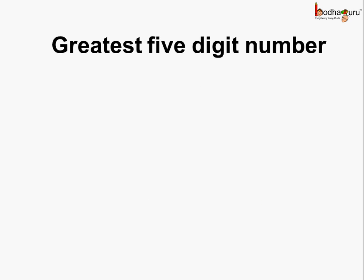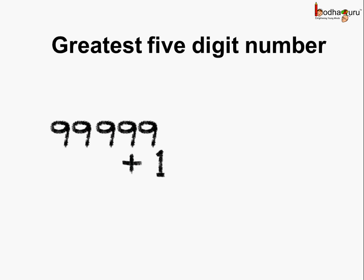Similarly, the greatest 5-digit number should be 9 written 5 times — so 9, 9, 9, 9, 9. Now let us again add 1 to it.